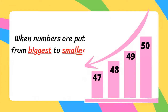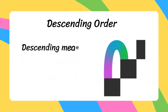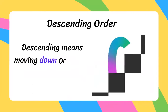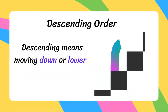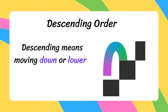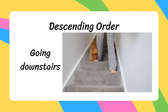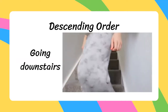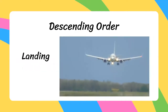When numbers are put from biggest to smallest, it is called descending order. Descending order means moving down or lower in position — for example, going downstairs or when an aeroplane is landing.